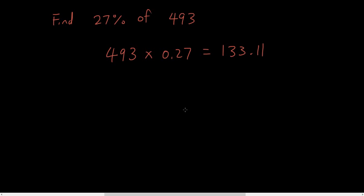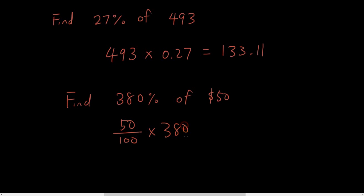What if you want a percentage that is more than a hundred percent? For example, find three hundred and eighty percent of fifty dollars. You can either do fifty divided by a hundred to give you one percent, then times by three eighty — that's option one. Or option two, you can just go fifty times three point eight, because three hundred and eighty divided by a hundred gives you three point eight. So those are the two methods you can use for finding percentages. The answer is a hundred and ninety.